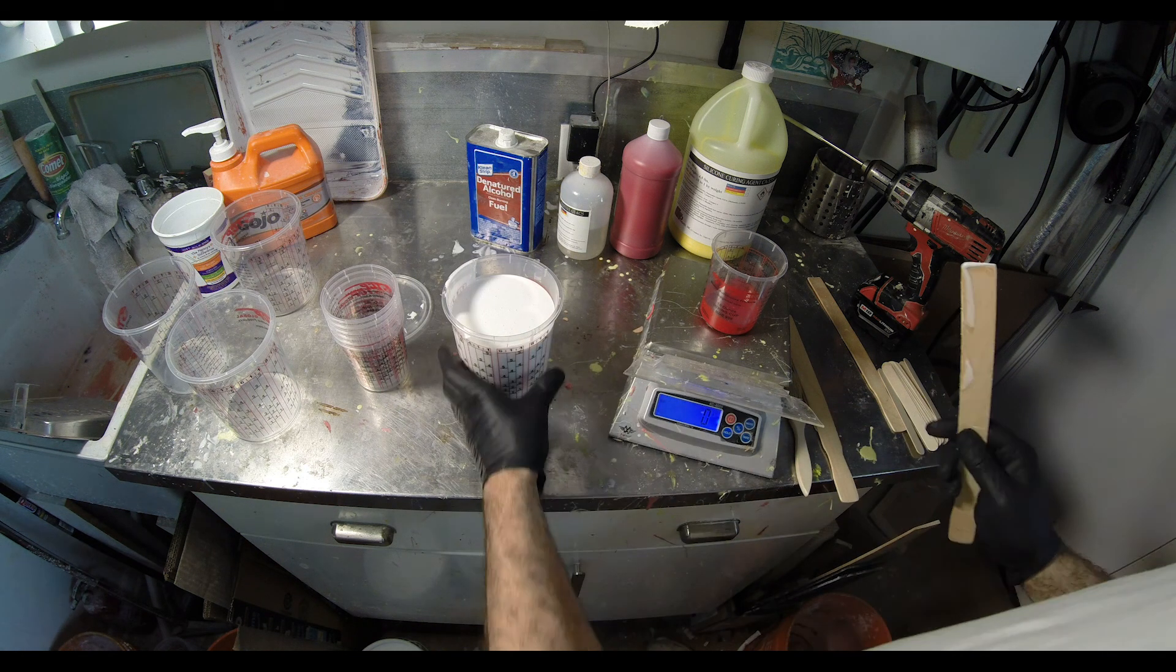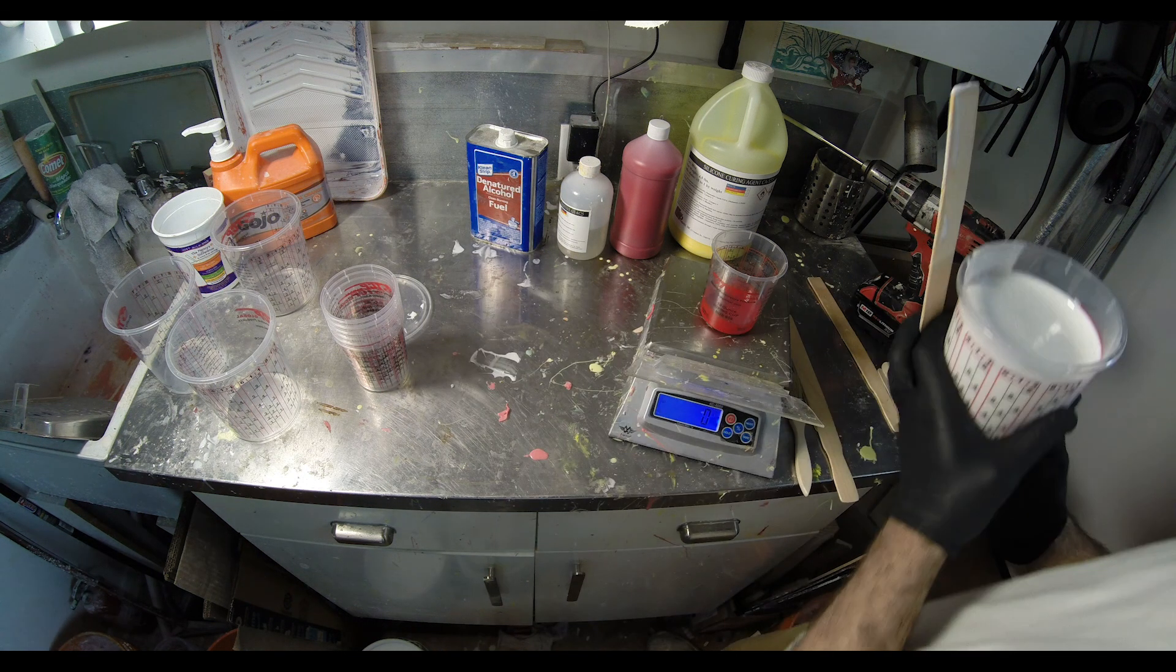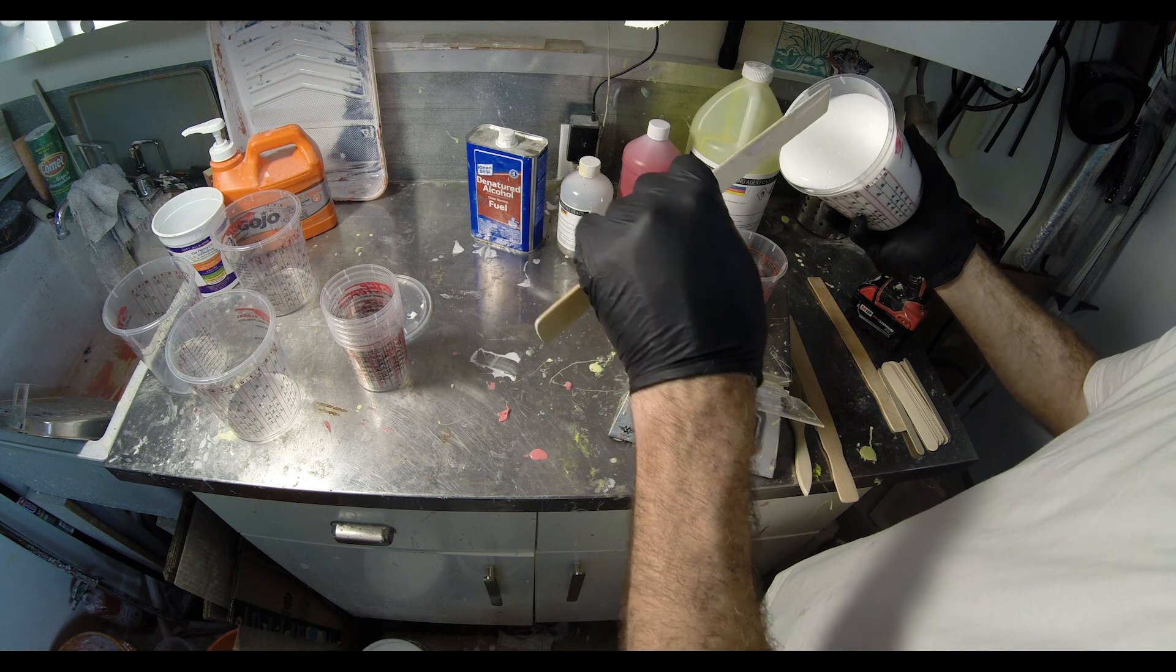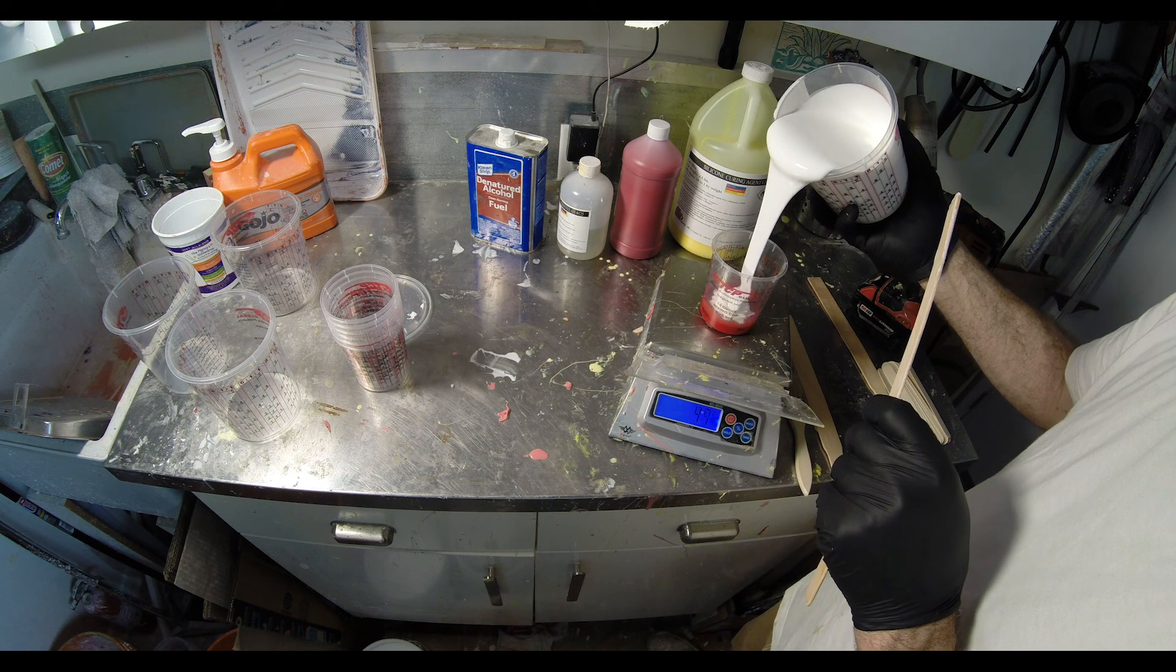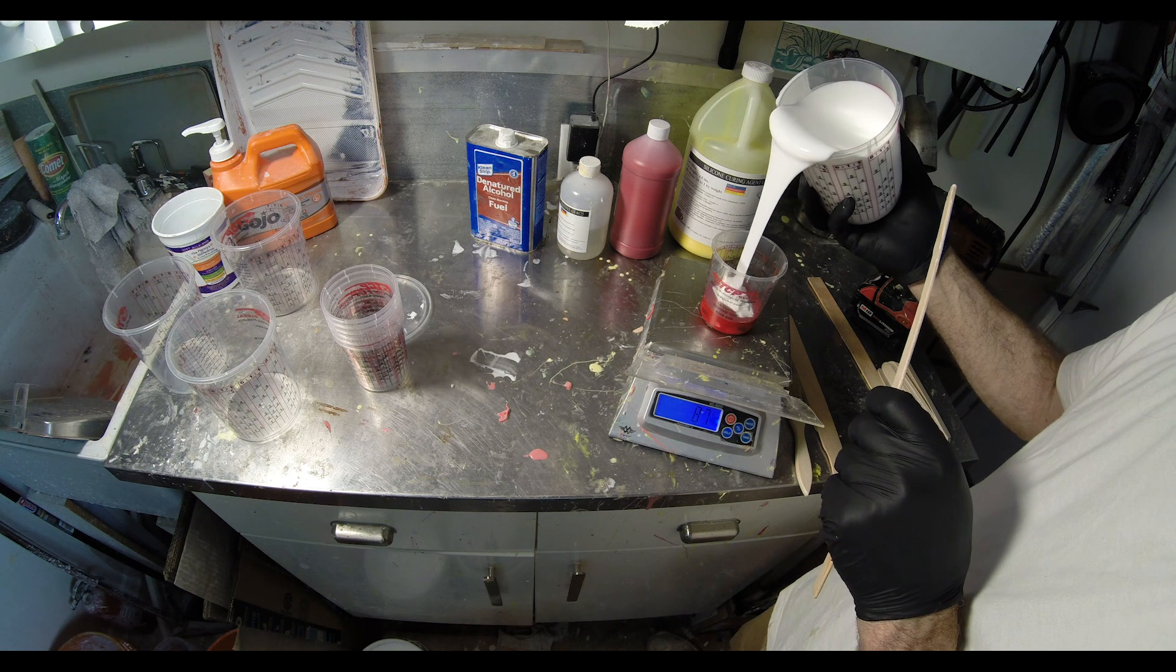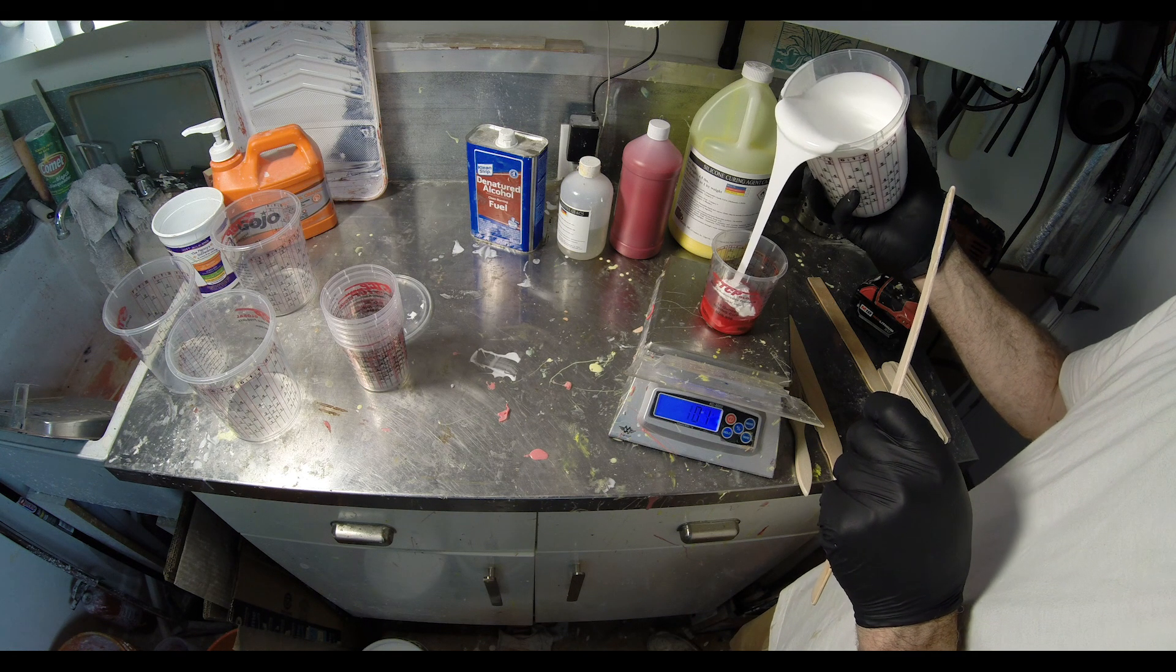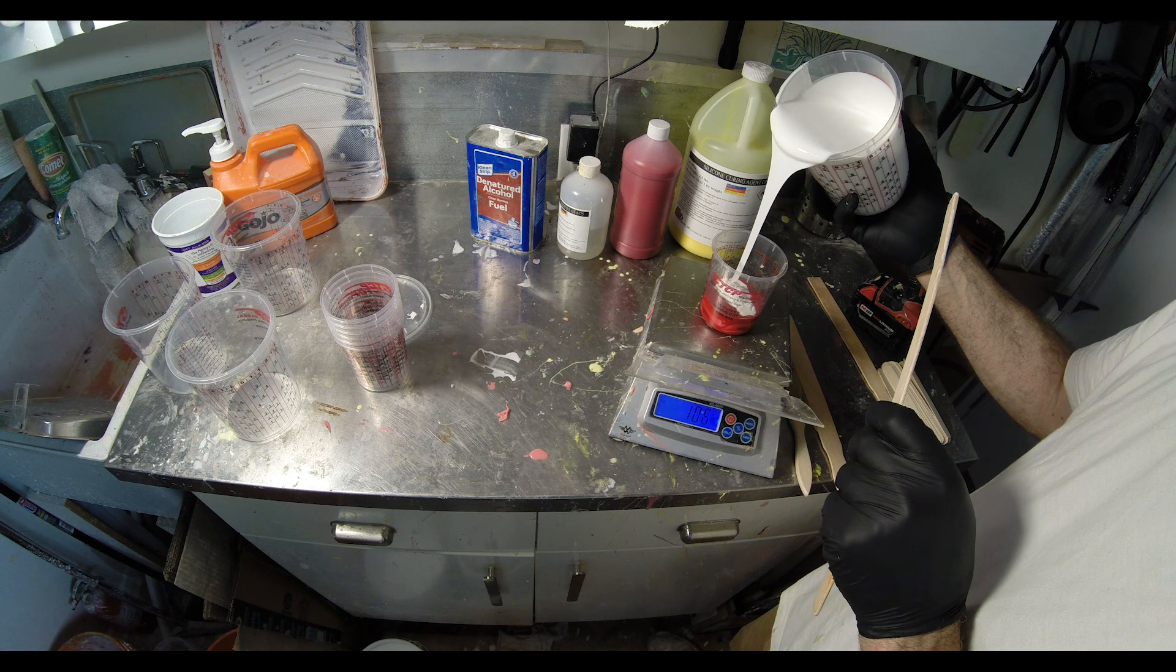I'm going to zero my scale again and pour out the appropriate amount of silicone on top of the catalyst. Putting the catalyst in the cup first and then the silicone means that I don't get a lot of uncatalyzed silicone stuck to the edges of my mixing cup.